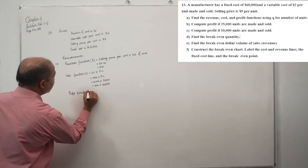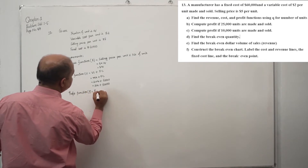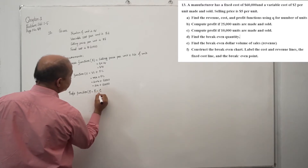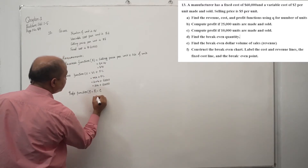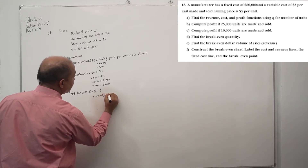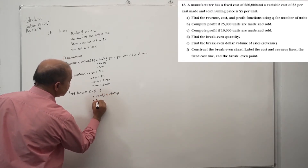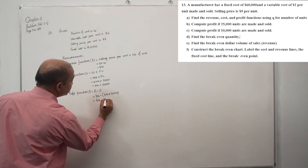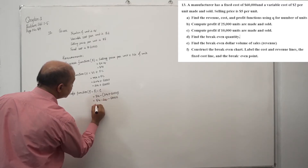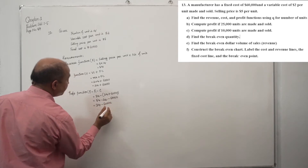So what is the profit function? Profit function equals revenue function minus cost function. Revenue is 5Q minus cost which is 2Q plus 60,000. So that gives us 5Q minus 2Q minus 60,000, which equals 3Q minus 60,000.